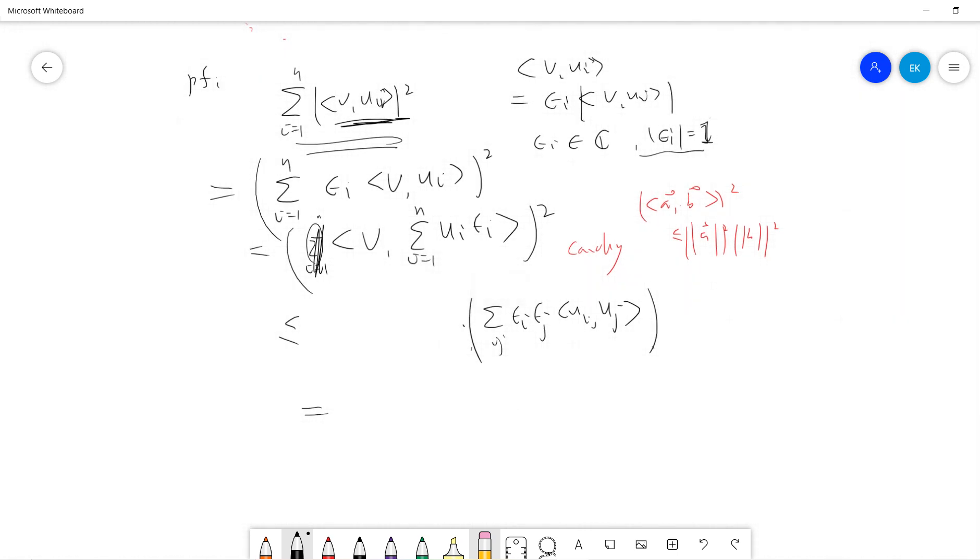So this original term will be less than or equal to i from 1, j from 1 to n, epsilon i, epsilon j, and the Ui, Uj. And remember that this epsilon i can have norm 1. So this guy is less than or equal to Ui, Uj, i from j to 1 to n. So this is the proof.